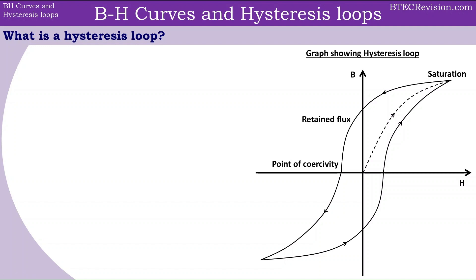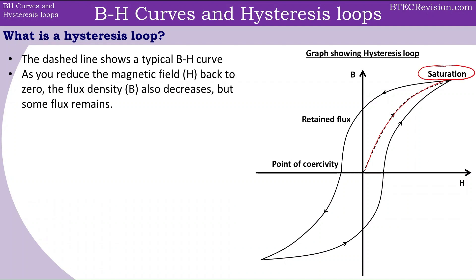Starting with the dashed line in the graph, this is showing a typical BH curve. As we increase the magnetic field strength following this graph, we reach the saturation point. As we then reduce the magnetic field strength H, we go along this line and reach the point at which H is equal to zero. But as you can see, there is still some magnetic flux density B remaining, and this is known as the retained flux.